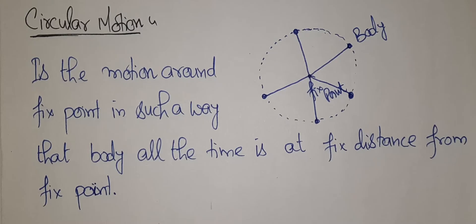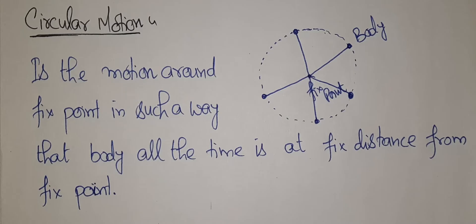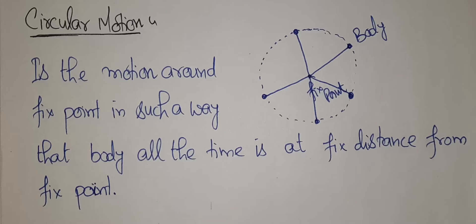Now, some specific variables related to circular motion: angular displacement — displacement of the body in terms of angle when it is moving on a circular path — and similarly angular speed or angular velocity, and angular acceleration. Let us see how to define those variables.